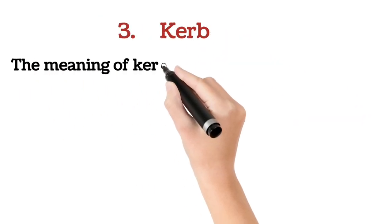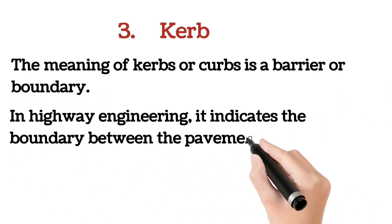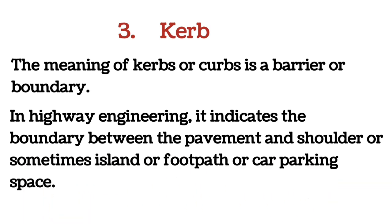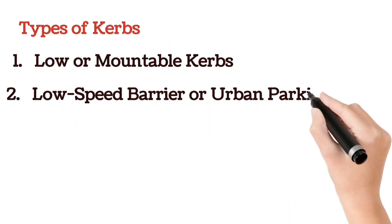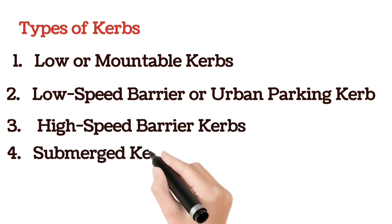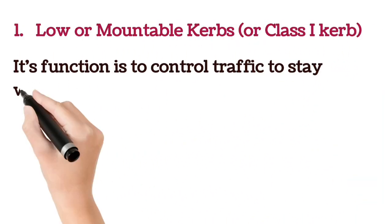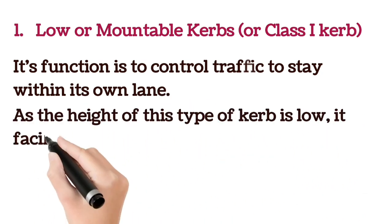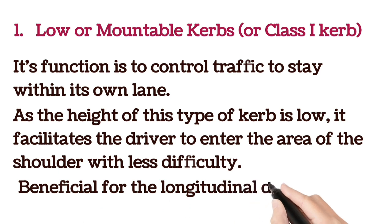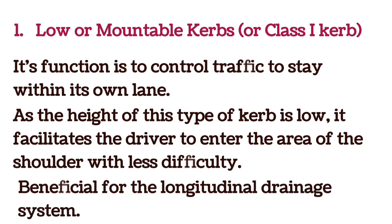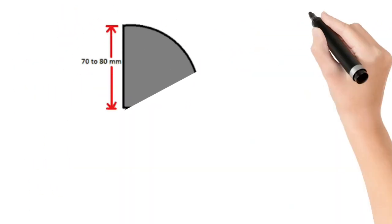The next cross-sectional element is curb. A curb is a barrier or boundary in highway engineering indicating the boundary between pavement and shoulder, or sometimes an island, footpath, or car parking space. There are four types of curbs. The first is low or mountable curb (Class 1): its main function is to control traffic to stay within its own lane. Because its height is low, it facilitates drivers to enter the shoulder area with less difficulty and is beneficial for longitudinal drainage. Its height is 70 to 80 mm.